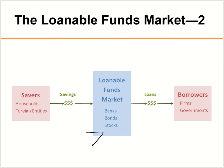This money is then borrowed by our borrowers, which are firms and government. Households and foreign entities also borrow in reality, but we're going to ignore that for this chapter — we'll assume the only people who borrow money are companies and our government. By the way, the U.S. federal government is a big part of the borrower side — they have borrowed $21 trillion, which is a lot of money.